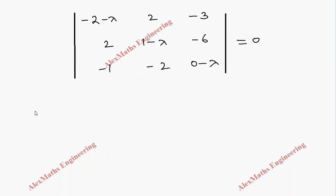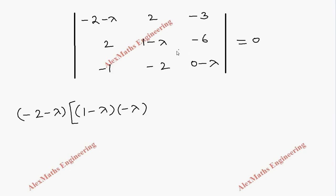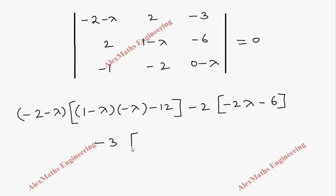Now let's expand. The first element is minus 2 minus lambda, then we take these four elements: (1 minus lambda)(minus lambda) minus (minus 6)(minus 2) which gives 12, and we subtract. The second element is minus 2, and taking those four elements: multiplying gives minus 2 lambda, and minus 6. The last element is minus 3, taking those four elements: multiplying gives minus 4, plus 1 times (1 minus lambda).